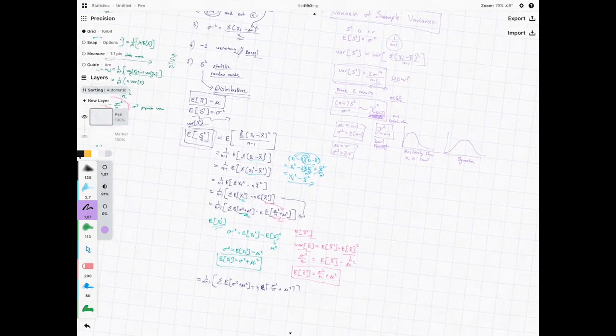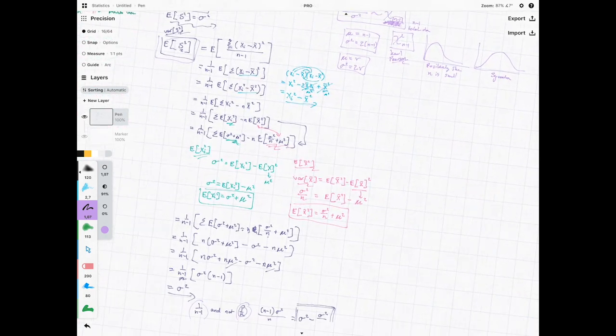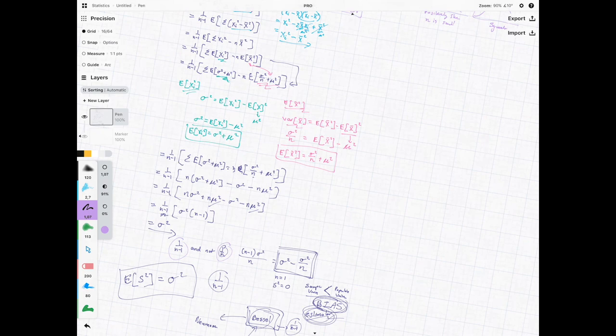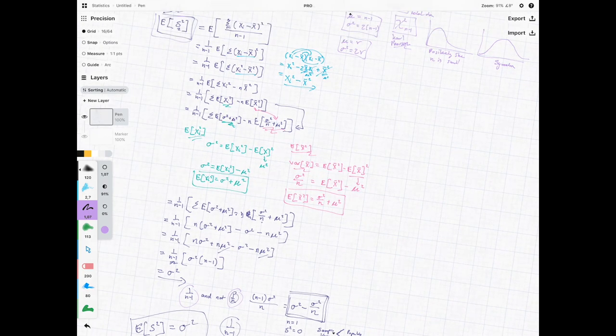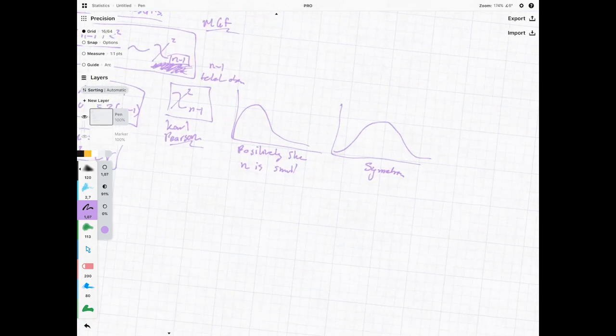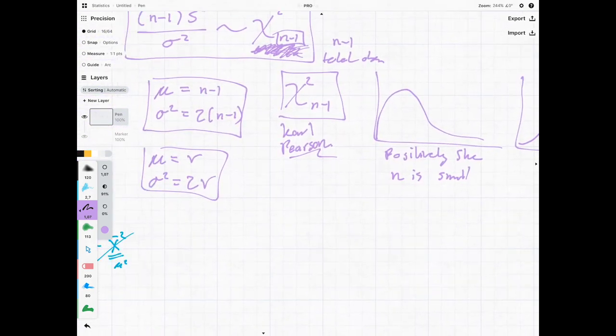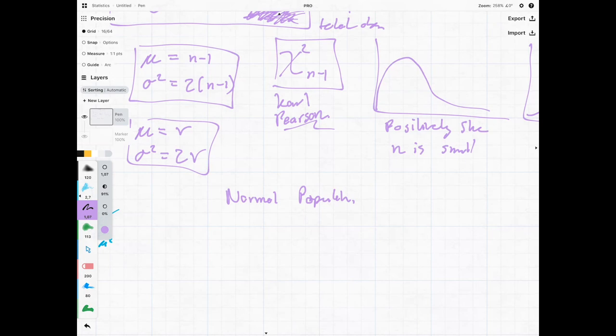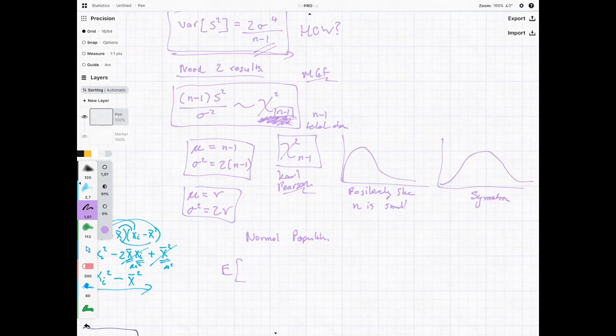Because remember how we did this whole long expected formula over here? If they ask you in the exam and it's worth 10 marks then you do it this way. But if it's only for like say two marks and they give you the extra information that you are sampling from a normal population then you can use the following. You know that the expected value and you use this result over here.